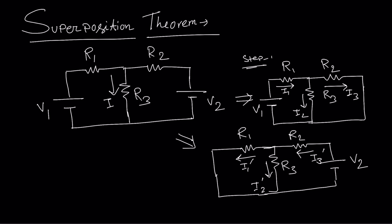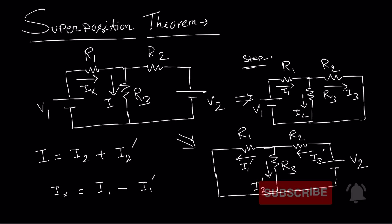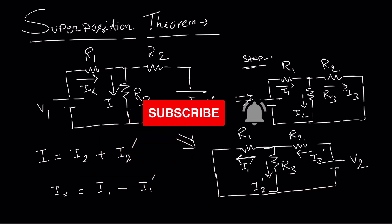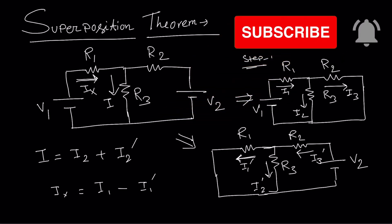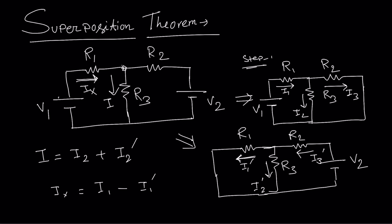The total current I through R3 will be I2 plus I2 dash. Now, if we consider current Ix, we write Ix equals I1 minus I1 dash. Why minus? Because the I1 dash current direction is opposite to Ix — I keep the current direction from V1 to the node, meaning I1 is higher than I1 dash. Similarly, if we consider Iy, we can write Iy equals I3 minus I3 dash.